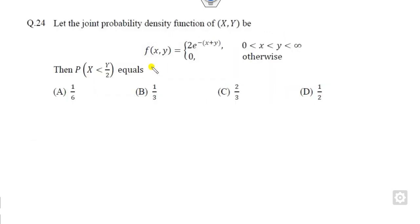This is question number 24 which is related to joint density functions of two random variables, and your target is to find this probability of x less than y/2 over this domain.